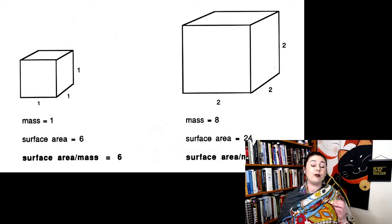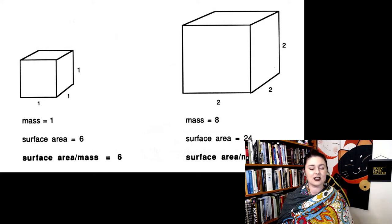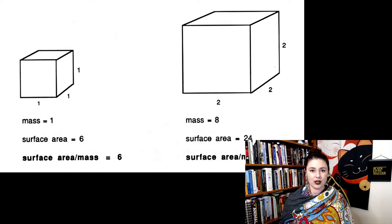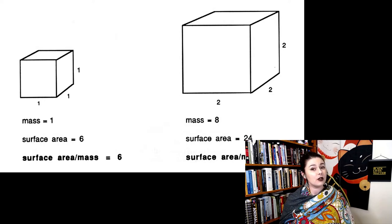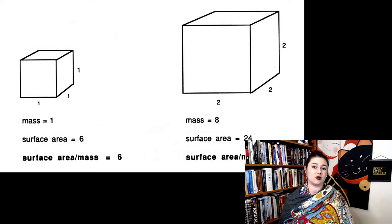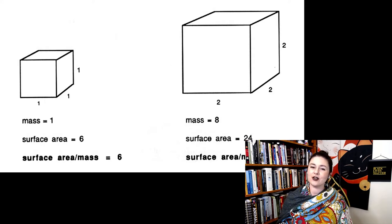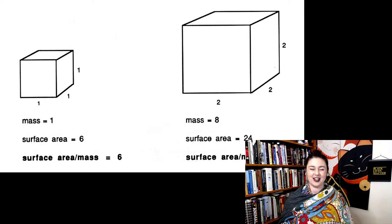So the bigger you are, the easier it is to retain heat. This is the primary strategy that animals use if they live in a really cold place. But if you're in a really hot place, you want to do the opposite. You want to dissipate heat as much as possible because you don't want to overheat. So we see, in general, bigger animals in cold environments and smaller animals in hot environments.